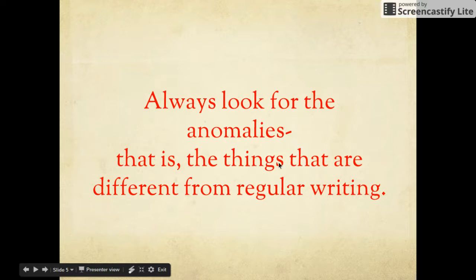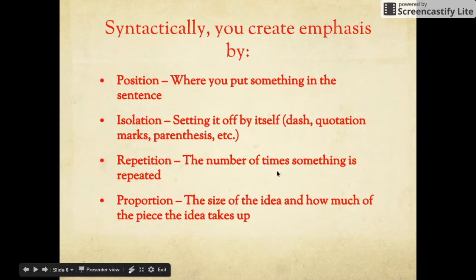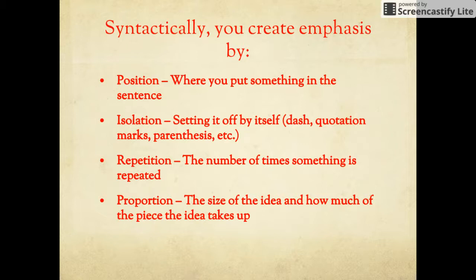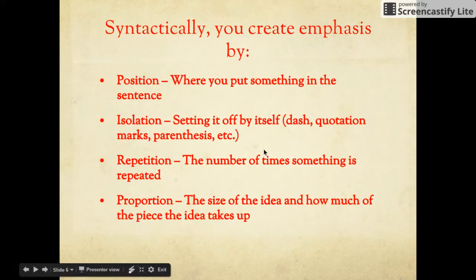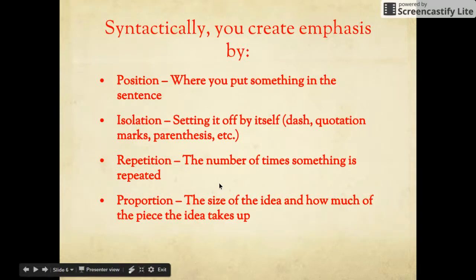Before you start reading, look for anomalies — things that are different from regular writing. What sticks out as a little different, and try to explain it to the best of your ability. As you read for syntax, look at where things are positioned in sentences. Look for things that are isolated, maybe by a dash, quotation marks, parentheses, or italics. Look for repetition — things that are repeated. We'll talk about parallelism too. Also look for proportion — how much of the piece a given idea takes up.